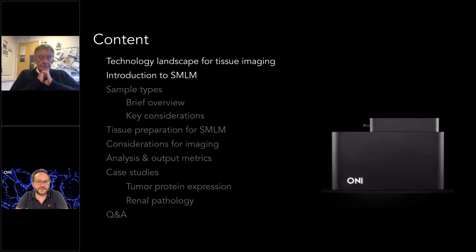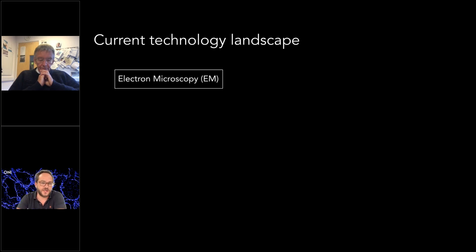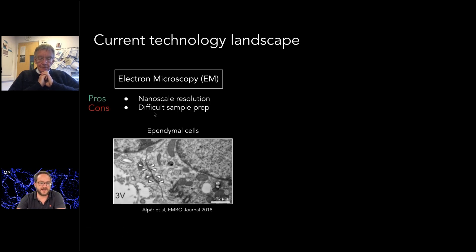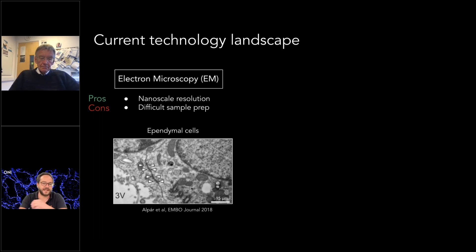Jumping into the technology landscape, there are a number of technologies used to image tissues. One is electron microscopy, which provides nanoscale resolution and is well suited for imaging fine structures within cells or tissues. However, sample preparation can be quite difficult, requiring specialized reagents and equipment, and multiplexing — meaning detecting two or more proteins — can be quite challenging.